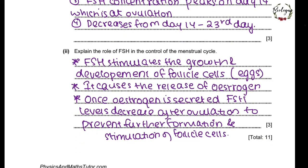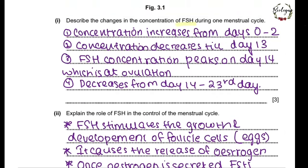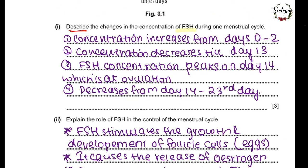Now, explain the role of FSH in the control of the menstrual cycle. Do you see the difference between these two terms — describe and explain? Describe means you just have to take the terminology from the graph, infer everything from the graph, and say what trends you see. Explain means you have to describe in terms of biology — biological terms are what you have to use to describe the phenomenon. The biological concept is what you have to describe when they say explain.